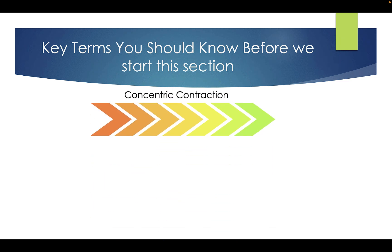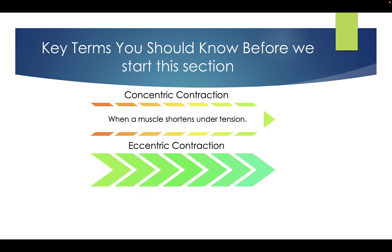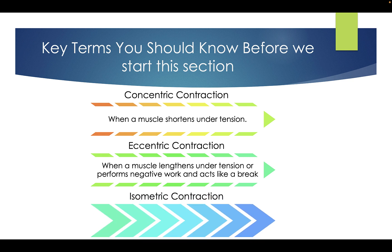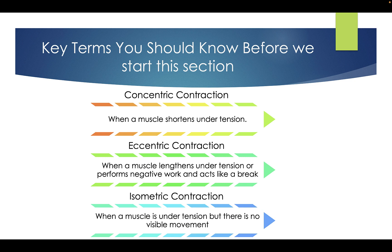Key terms you should know: Concentric contraction — when a muscle shortens under tension. Eccentric contraction — when a muscle lengthens under tension, performs negative work, and acts as a brake. Isometric contraction — when a muscle is under tension but there is no visible movement.